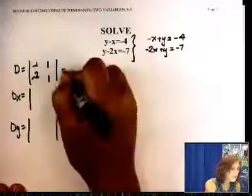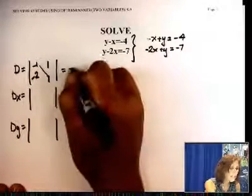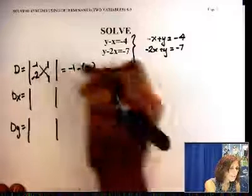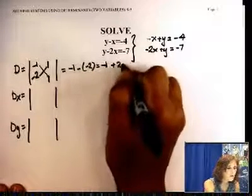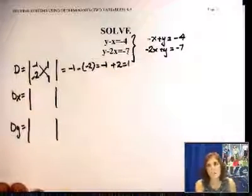So let's cross-multiply this with that, negative 1 minus this with that, negative 2, which is the same as negative 1 plus 2, which is 1. So that's non-zero, so I can keep going.